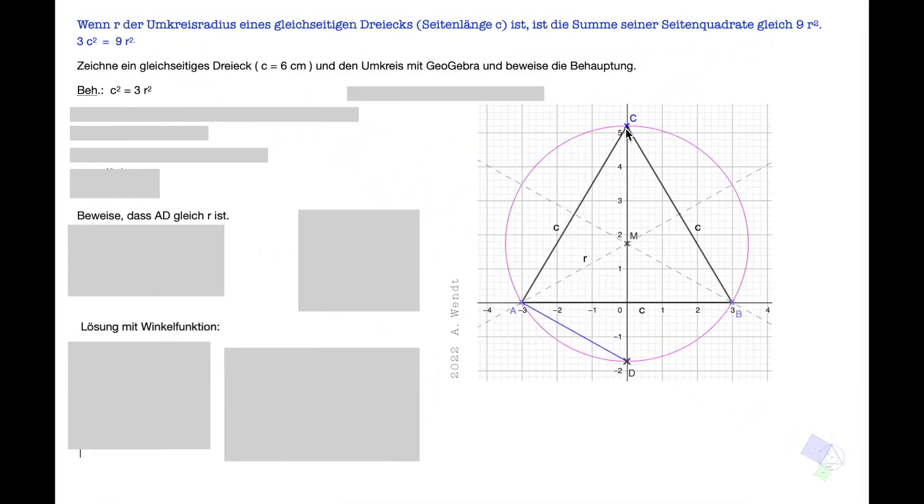Zunächst fällt auf, dass dieses Dreieck rechtwinklig ist. Warum ist es rechtwinklig? Weil das der Thaleskreis ist. Dann ist dieser Winkel hier ein rechter. Damit können wir den Satz des Pythagoras auf dieses rechtwinklige Dreieck anwenden.